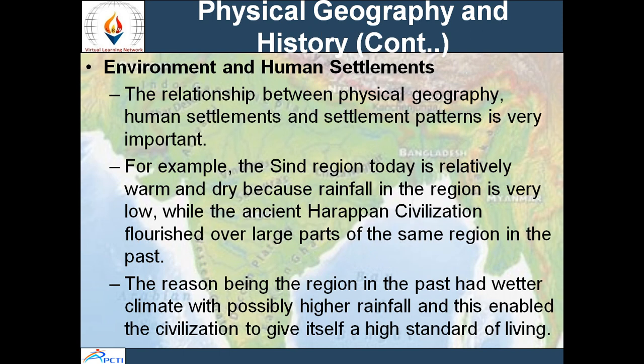Talking more about physical geography, let's discuss environment and human settlement. The Sindh region, which covers a little bit of Gujarat, is relatively warm and dry because rainfall is very low. But earlier it was not so, and therefore the ancient Harappan civilization flourished in that region. We can see a very good relationship between physical geography, human settlement, the settlement pattern, and the evolution of a particular area.